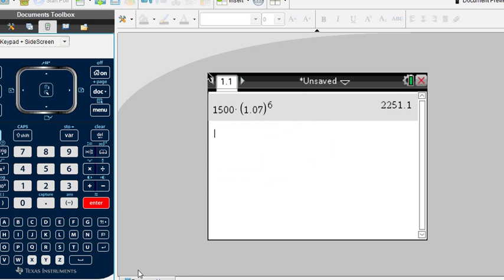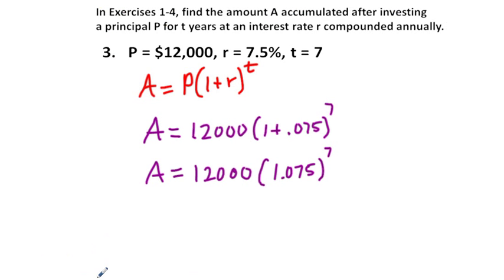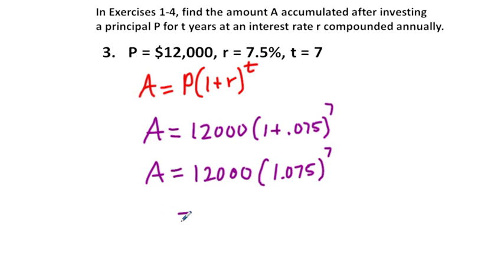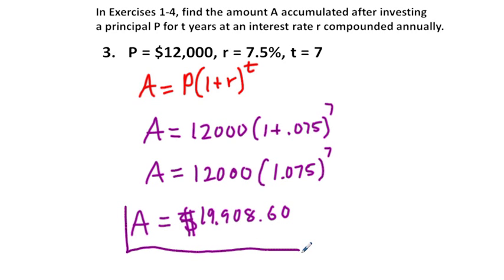We go to our calculator, 12,000 times 1.075 to the power of 7, and press Enter. We get $19,908.60. That's going to be our answer.